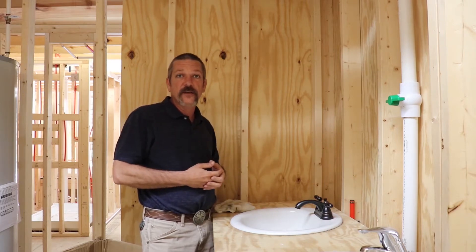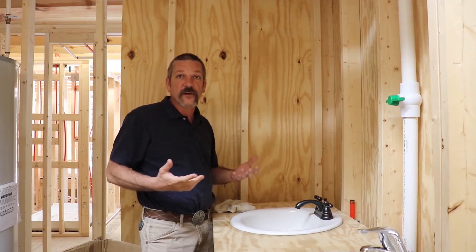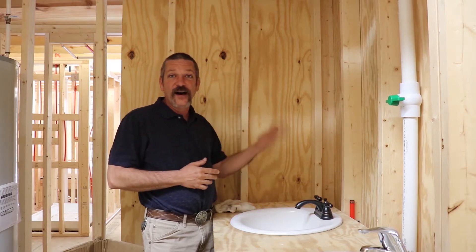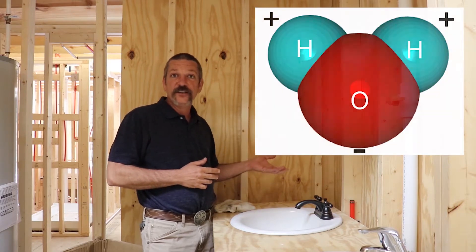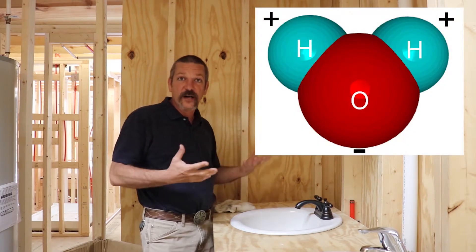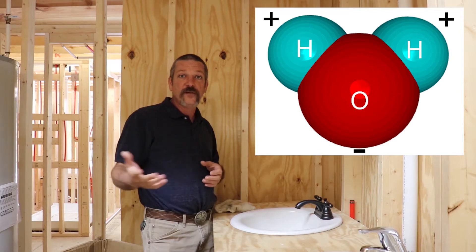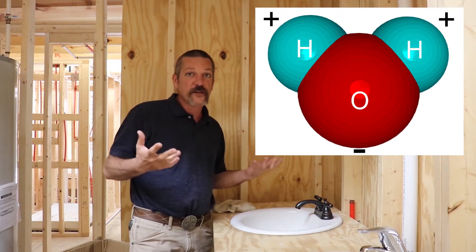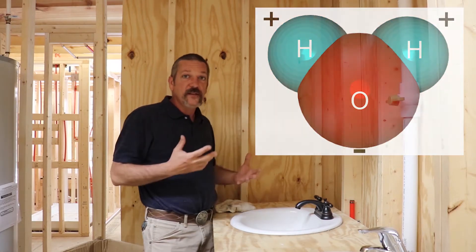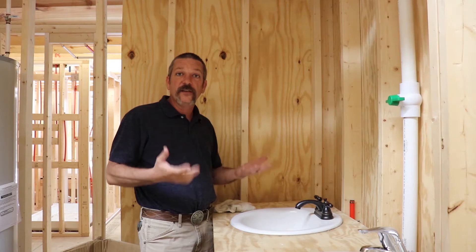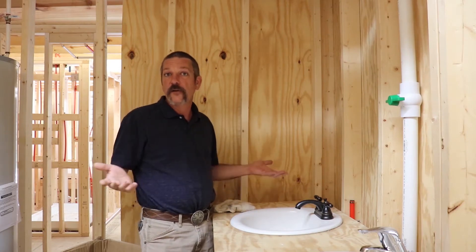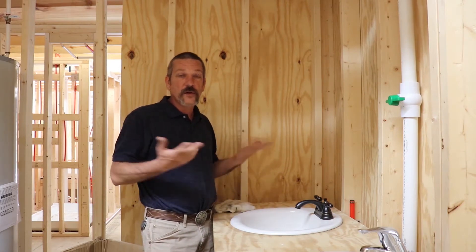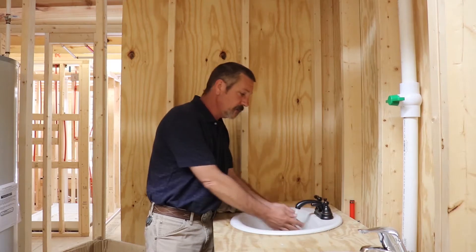The first property is it's a solvent, which is a molecular thing. There's a negatively charged oxygen molecule with two positively charged hydrogen molecules, which means it breaks things up — like dissolving sugar in sweet tea, or you can wash your hands with it.